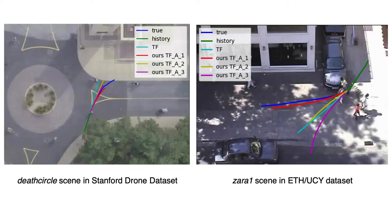We also provided visual results on two benchmark datasets and showed that our angle-regularized transformer models can track the curvature of the trajectories well, and thus address challenging prediction cases such as curved trajectories or sharp turns that commonly occur in a scene.